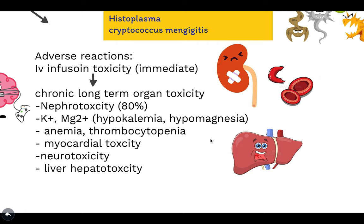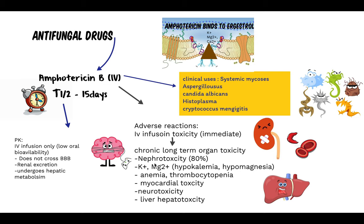The chronic cumulative organ toxicity is what students should remember. 80% of the time it can lead to nephrotoxicity, because the drug is excreted renally and can accumulate in the nephrons. It can also cause hypokalemia, hypomagnesemia, hematological conditions like thrombocytopenia, anemia, myocardial toxicity, and neurotoxicity. One other main one is hepatotoxicity, leading to impaired liver function. Do not give Amphotericin B to a patient with impaired liver or renal function, as it can make their condition worse.